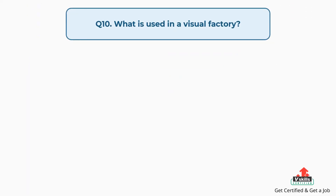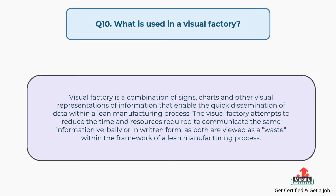Question number ten: What is used in a visual factory? A visual factory is a combination of signs, charts, and other visual representations of information that enable the quick dissemination of data within a lean manufacturing process. The visual factory attempts to reduce the time and resources required to communicate the same information verbally or in written form, as both are viewed as waste within the framework of a lean manufacturing process.